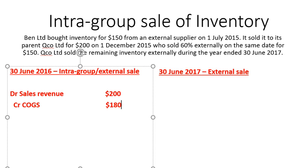Qco bought the inventory for $200, so Qco's cost base for that inventory is $200. When they sold that 60% of inventory, they would have recognised COGS of $120. So the total COGS between Ben Ltd and Qco Ltd is $270. But from the group's perspective, we only want to recognise $90, which is 60% of the original $150. To work out the credit COGS amount, we take $90 from $270, and that gives us the $180 amount.